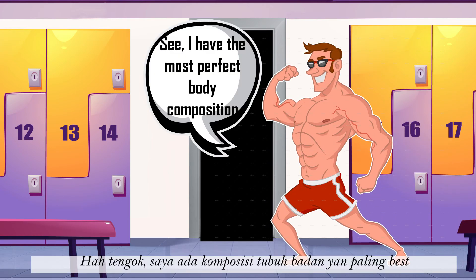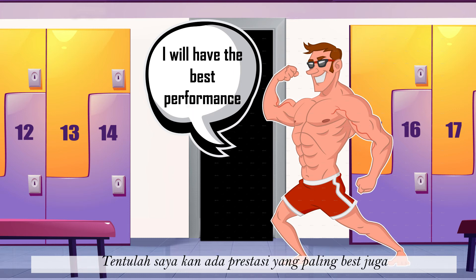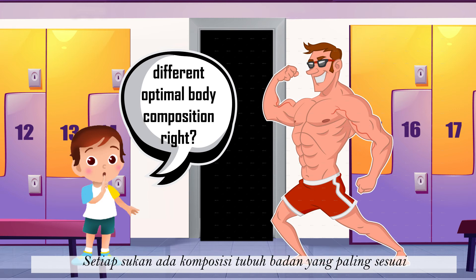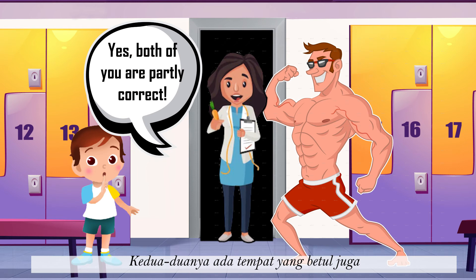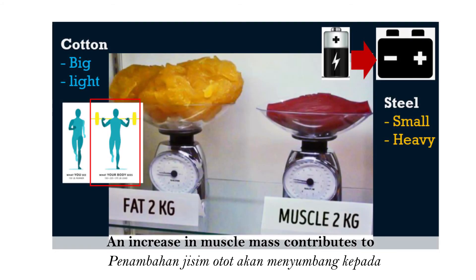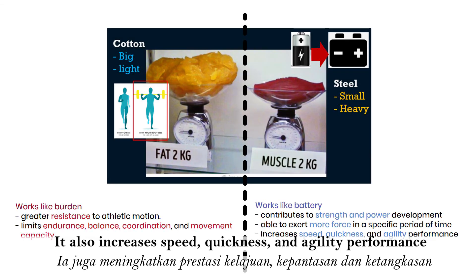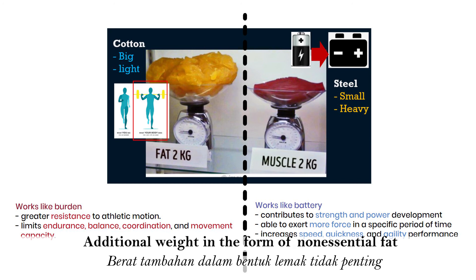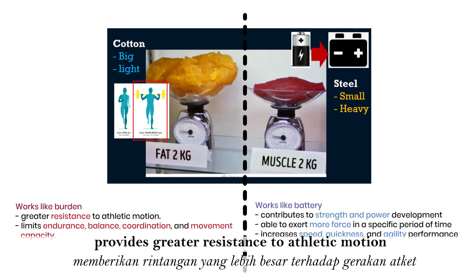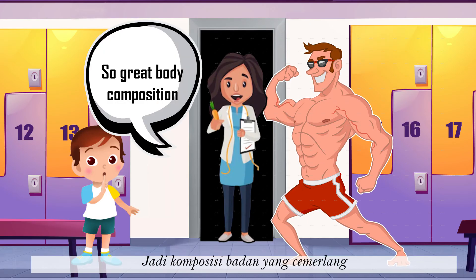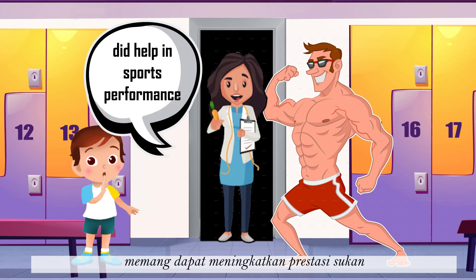I have the most perfect body composition so I will have the best performance. Not necessarily — different sports have different optimal body composition. Both of you are partly correct. An increase in muscle mass contributes to strength and power development, allowing athletes to exert more force in a specific period of time. It also increases speed, quickness and agility performance. Additional weight in the form of non-essential fat provides greater resistance to athletic motion, which limits endurance, balance, coordination and movement capacity.